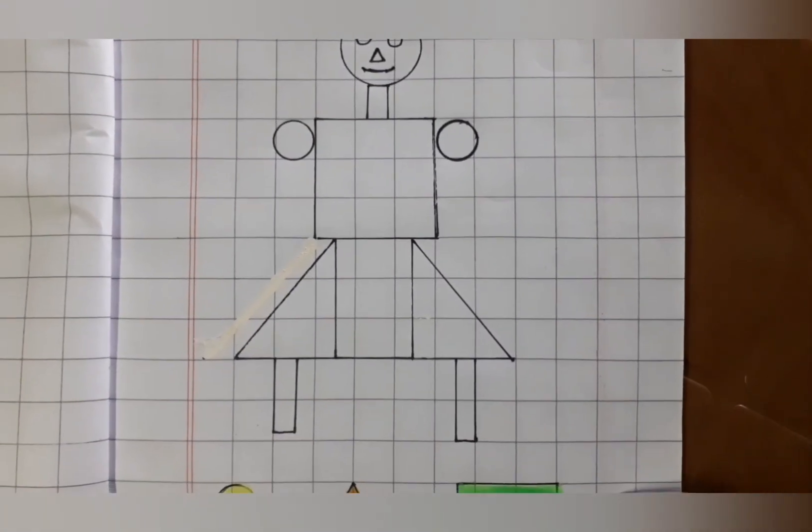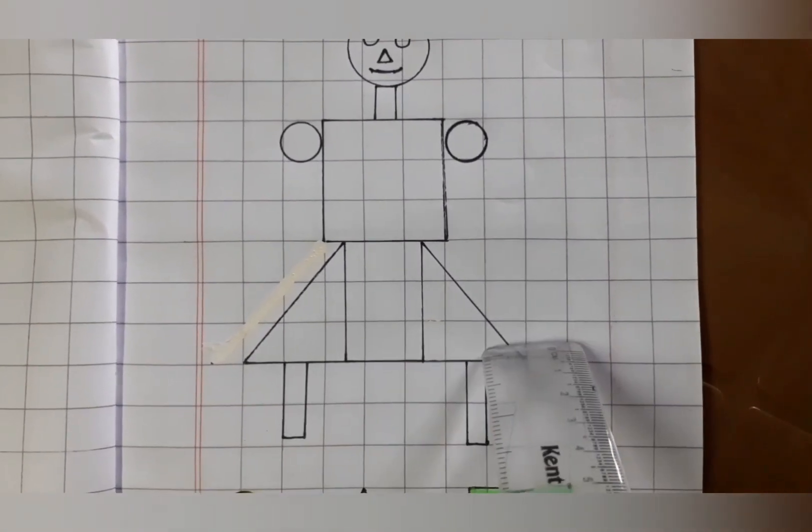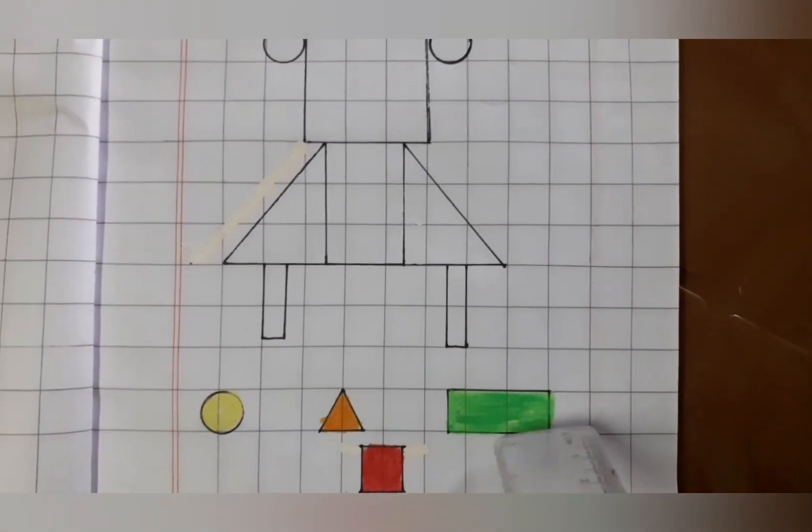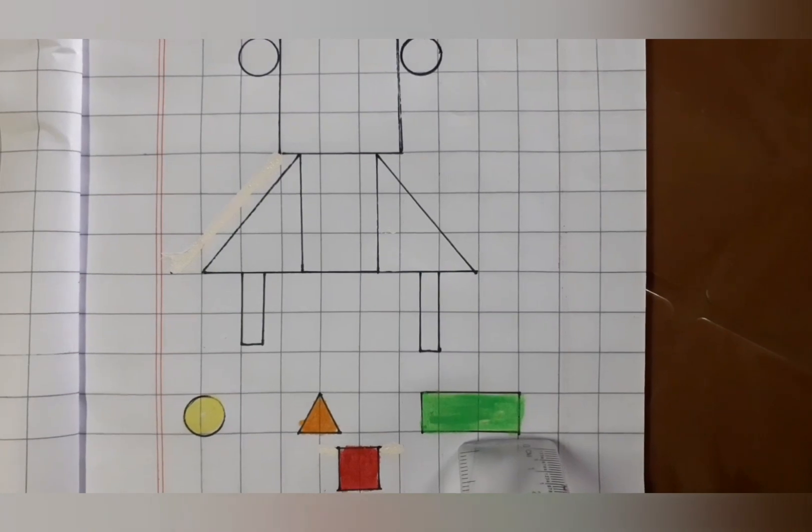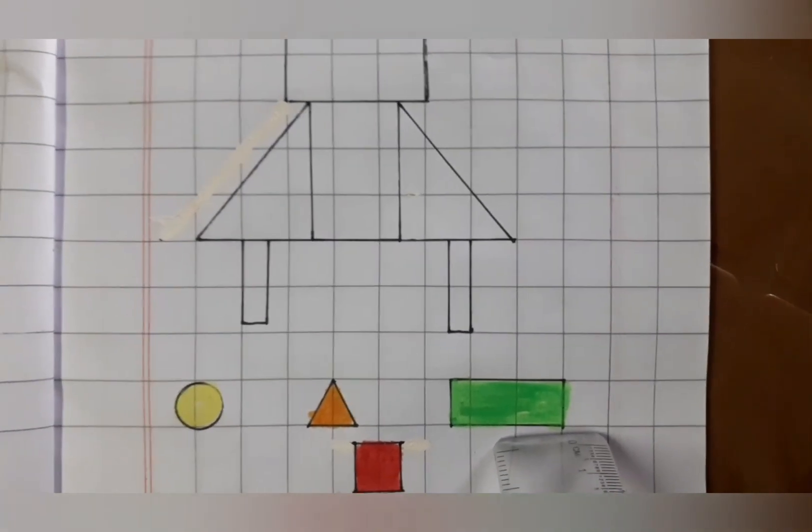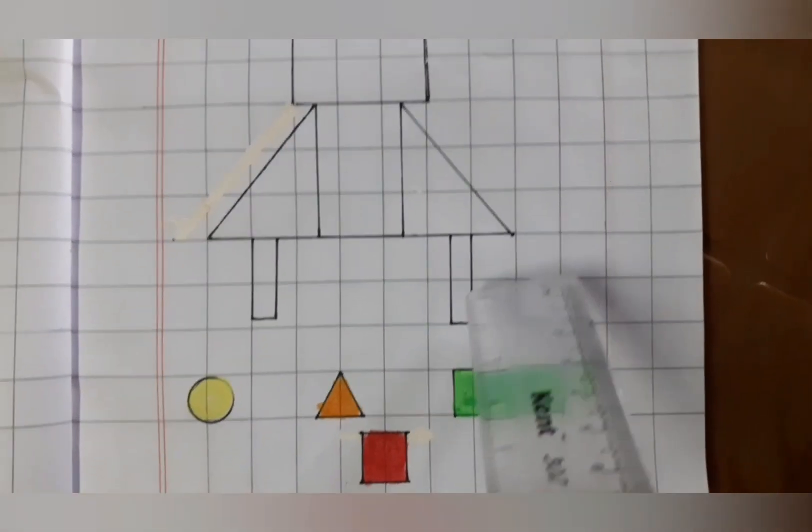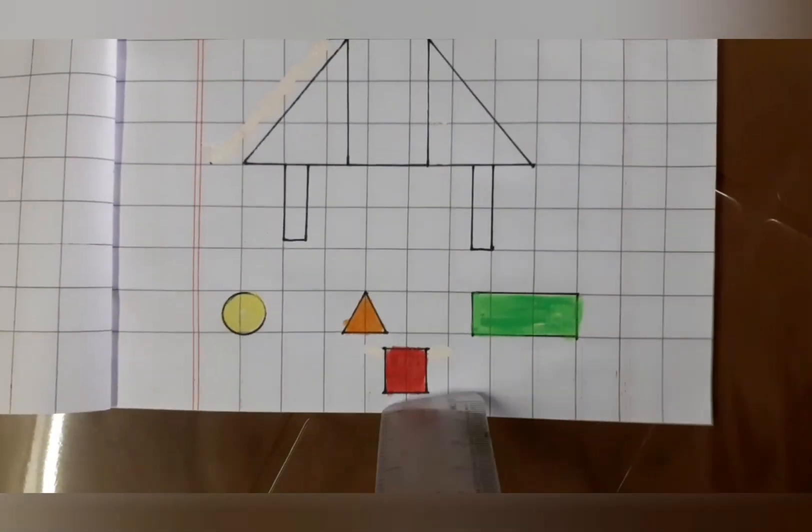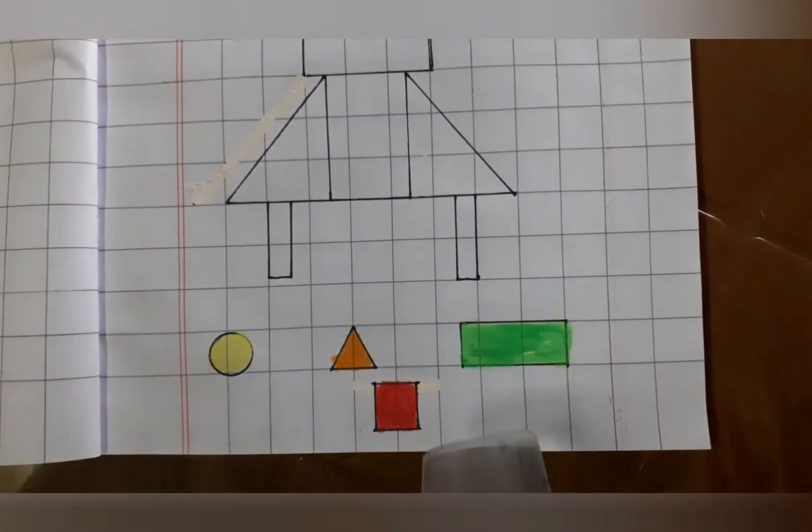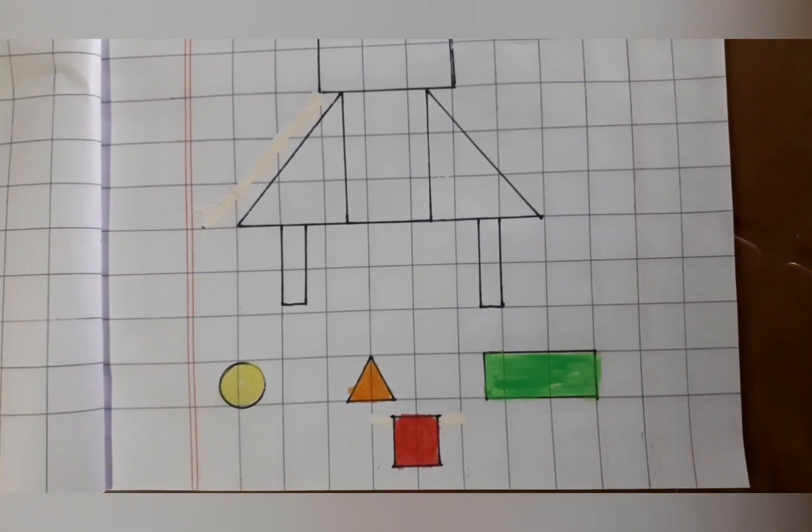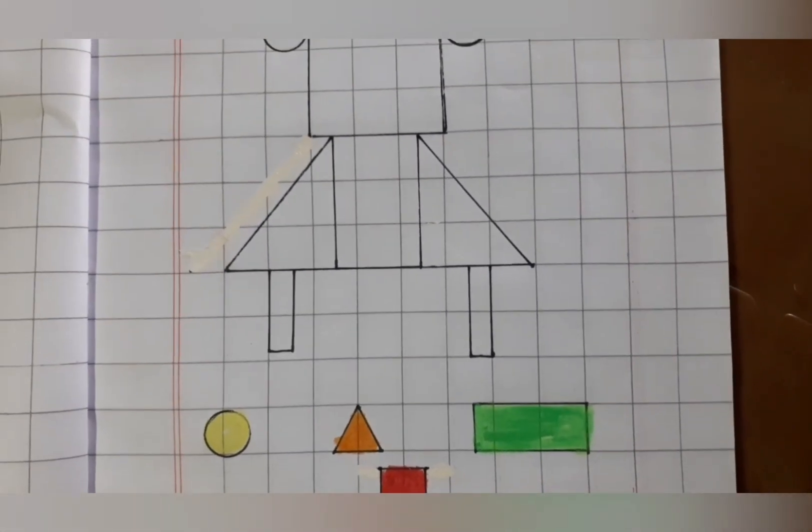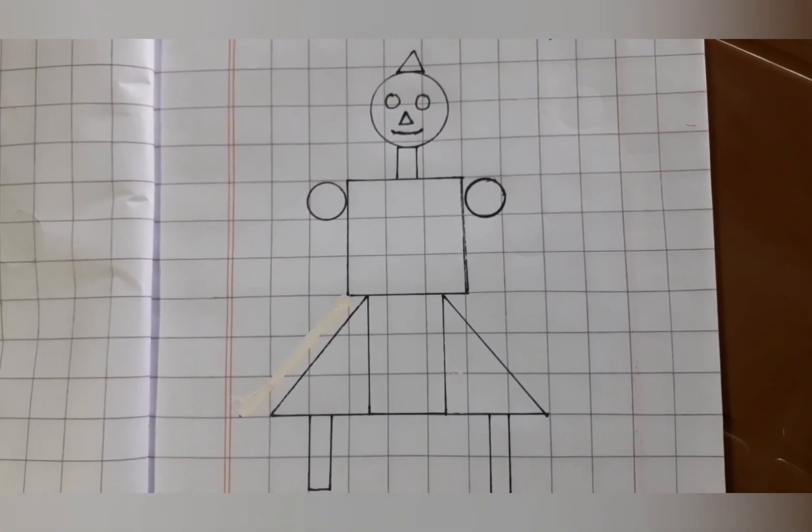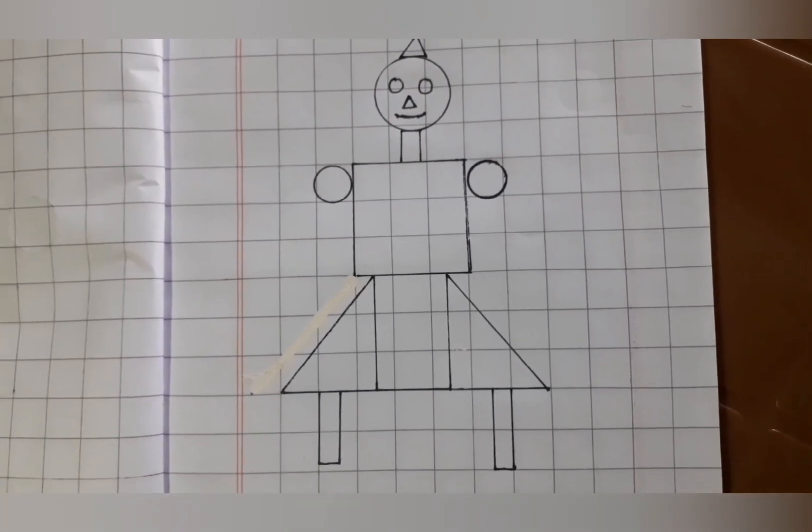Again, wherever you will find circles, you will just give yellow color. Again, wherever you will find triangles like this, you will give orange color. Wherever you will see rectangle, you will give green color. And wherever you will find square like this, you will give this red color. So, look into the picture, okay? See the picture carefully. You will find there are so many shapes. So, you will color them accordingly.